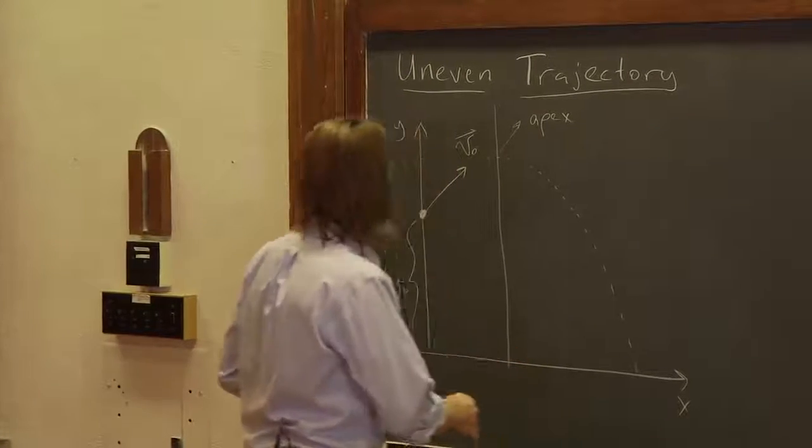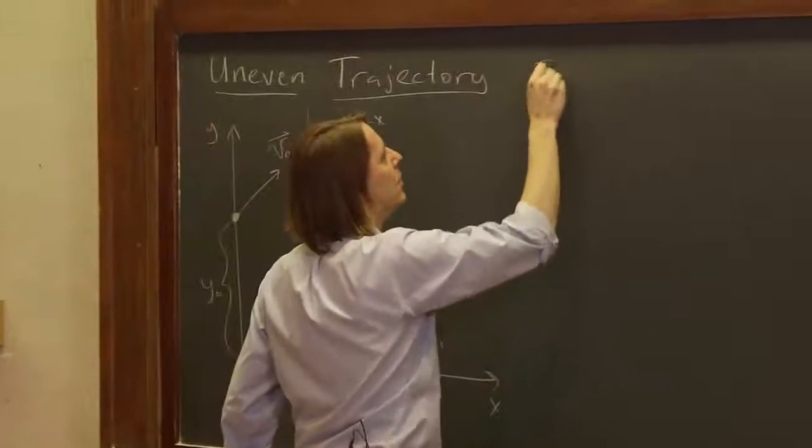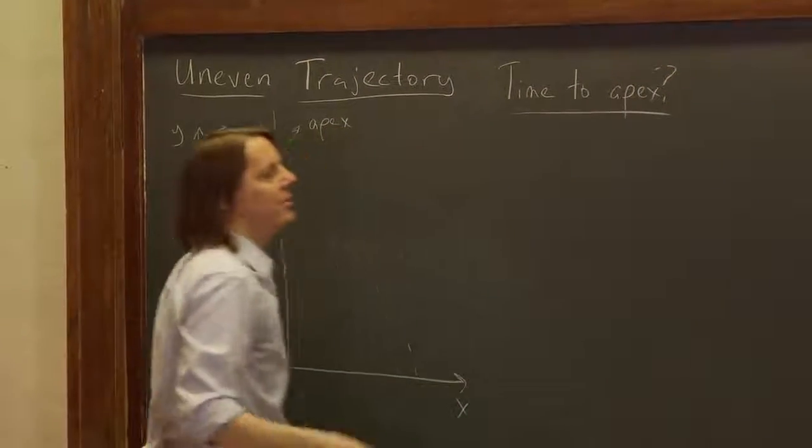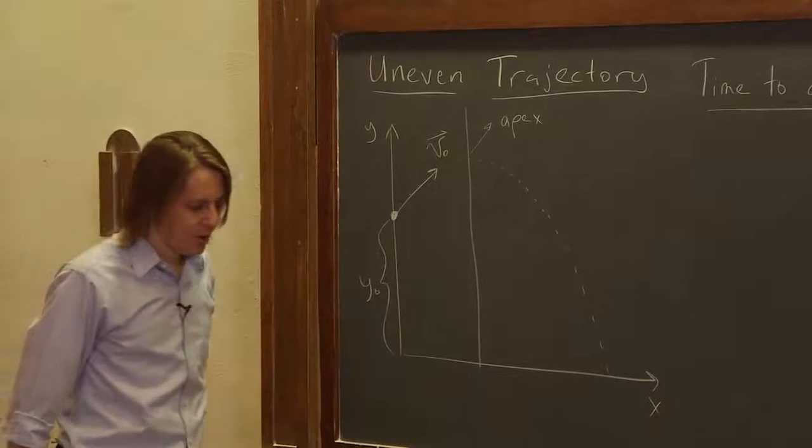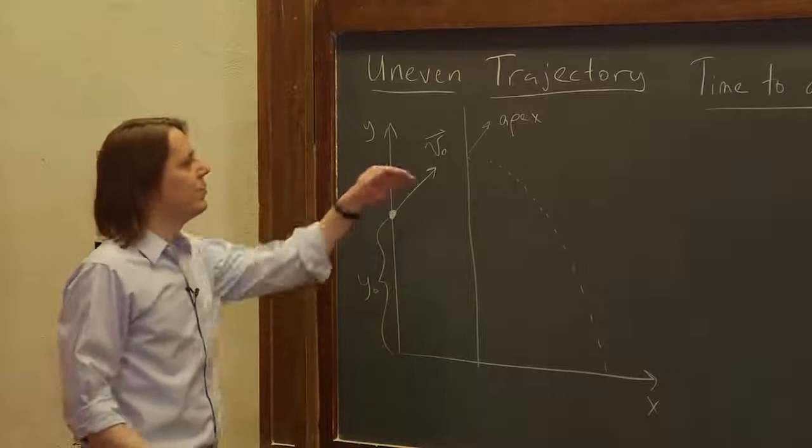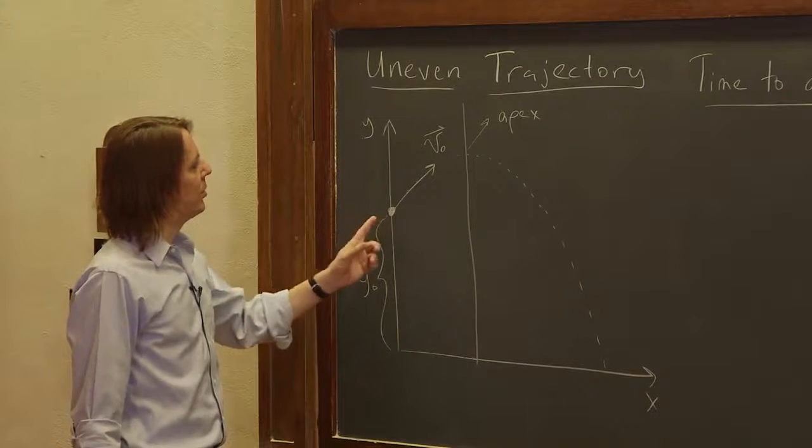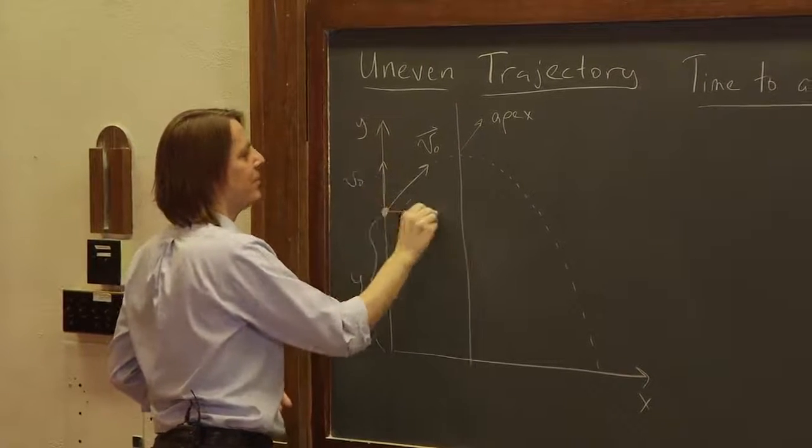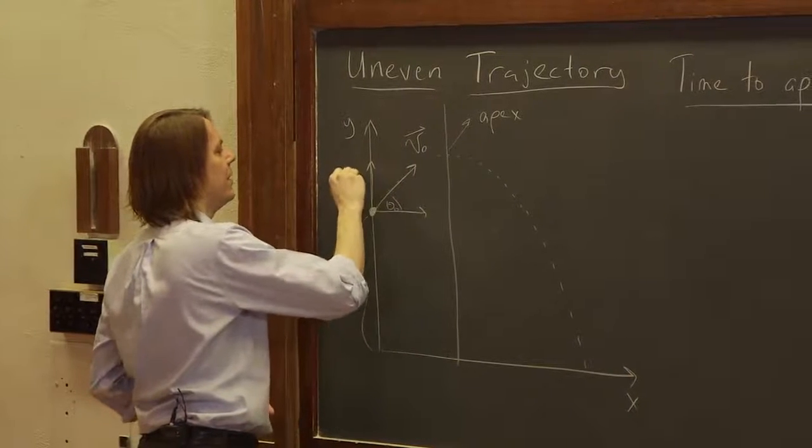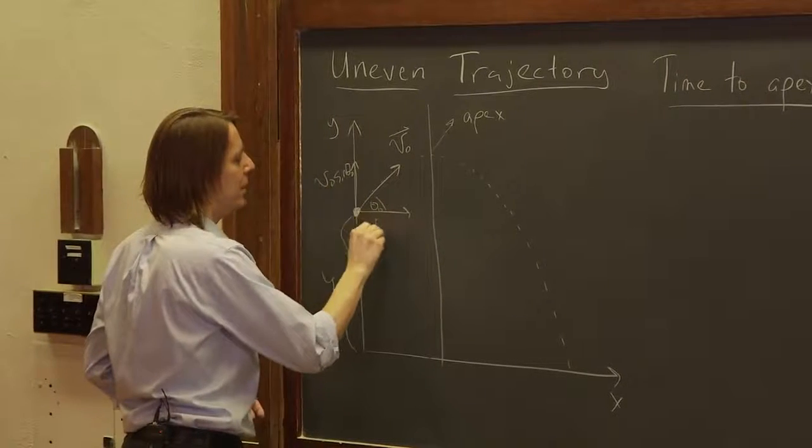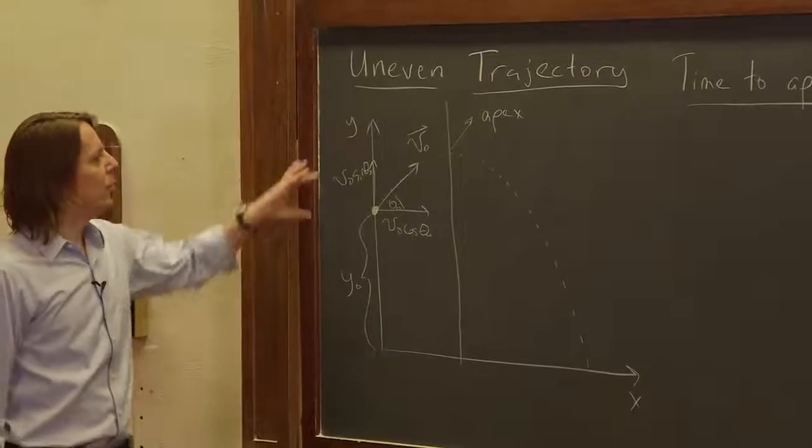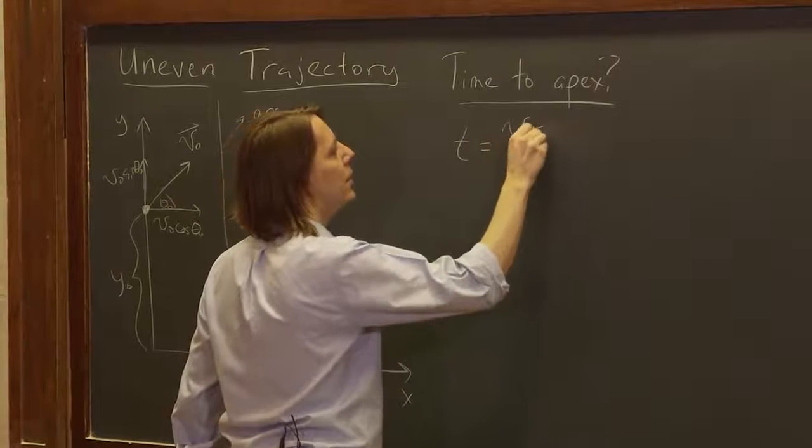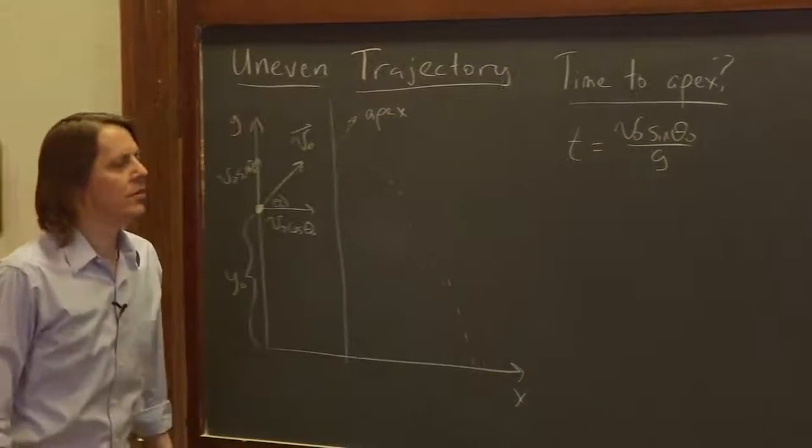So first, let's think about how long does it take to get to the apex. What is the time to the apex? That might be a question, but it's also a number that you critically need to answer pretty much any other question. This is similar to the range problem we did before. We have a component this way, that is v naught. If this is theta naught, then it's v naught sine theta naught. And we have a component this way, v naught cosine theta naught. So really, it's just the case that we're taking our y velocity, dropping it to zero. So the time is v naught sine theta naught over g. So that's the time to the apex.